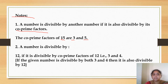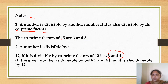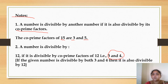A number is divisible by 12 if it is divisible by the co-prime factors of 12, that is 3 and 4. The 12 table has many multiples — 2, 6, 3, and 4 — but 3 and 4 are not related to any other table. They are only related by 1, so 3 and 4 are the co-prime factors for 12.